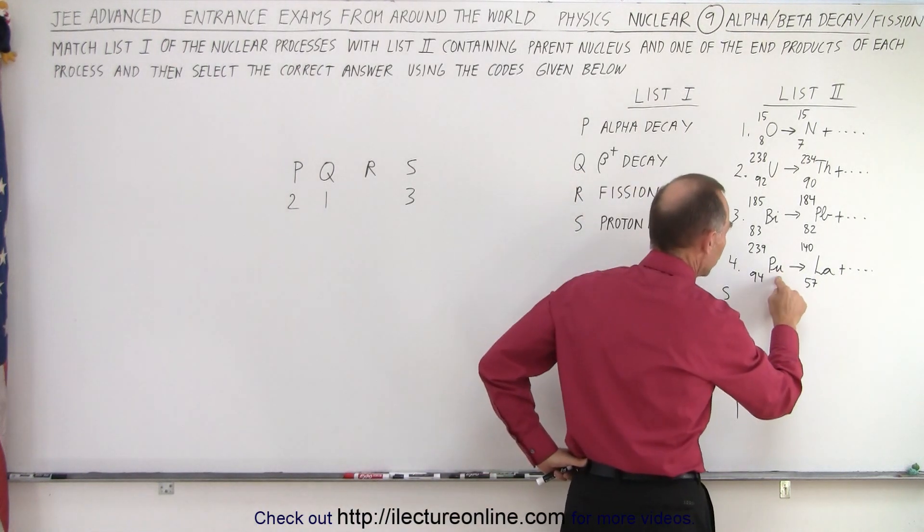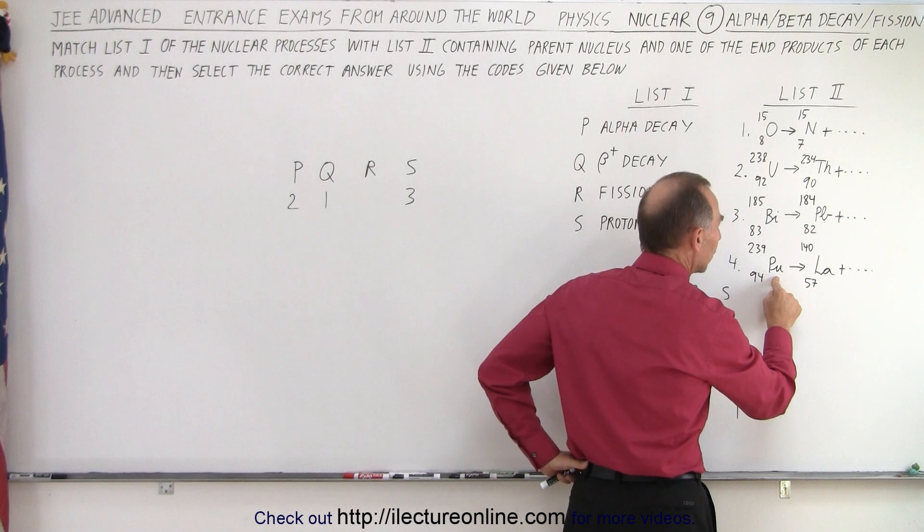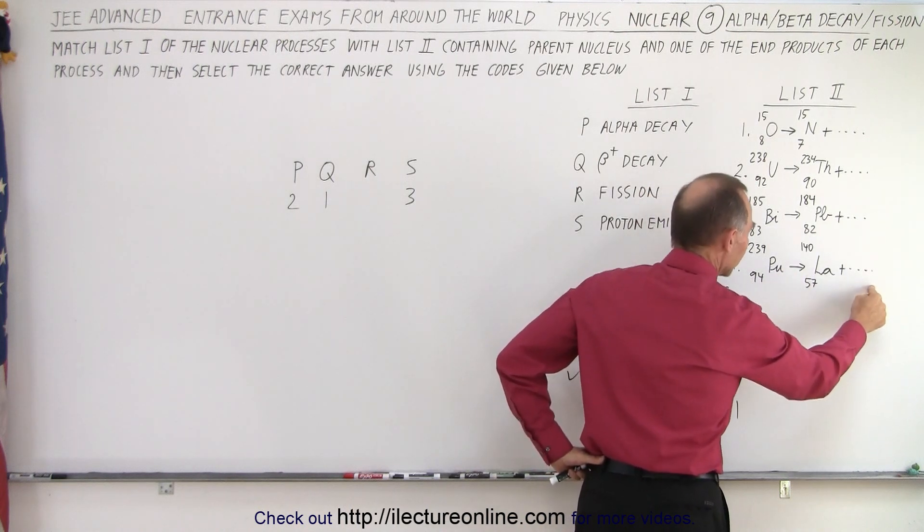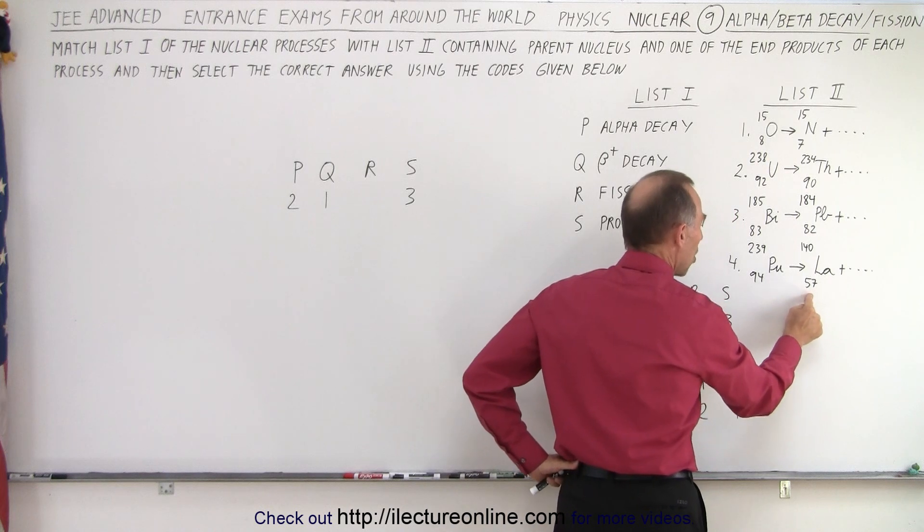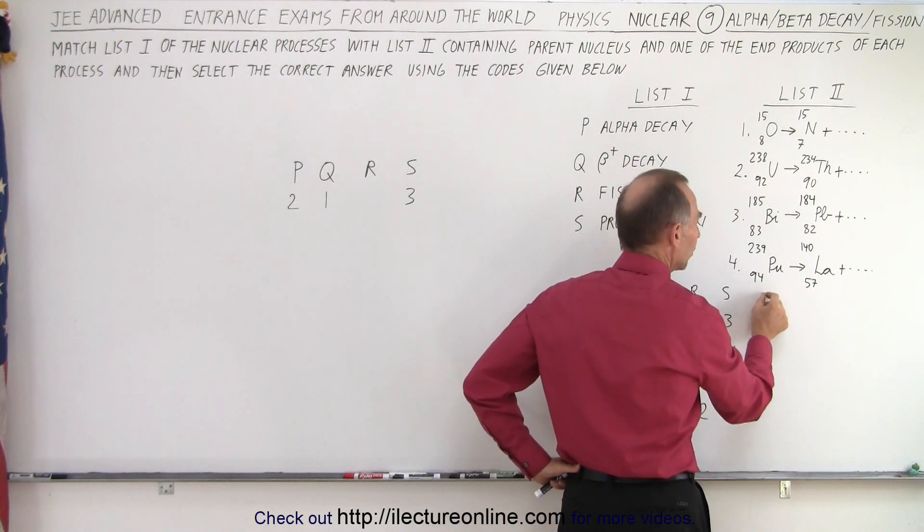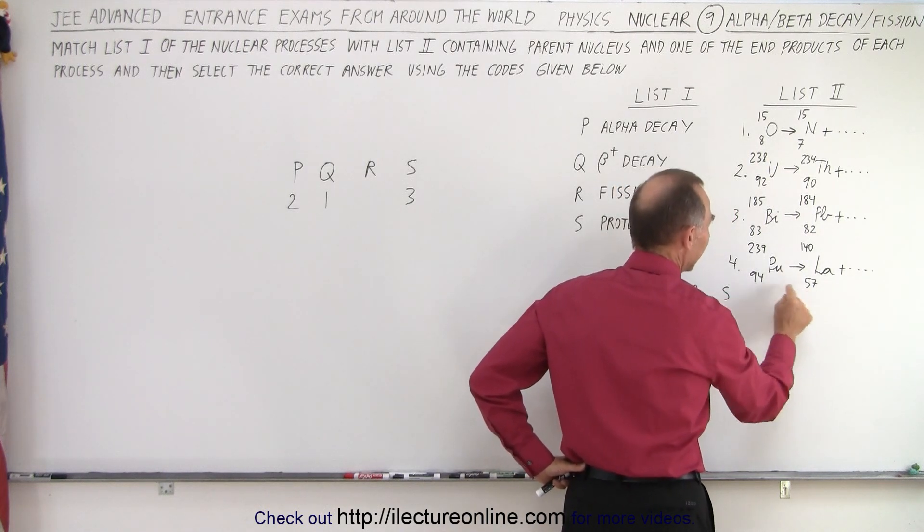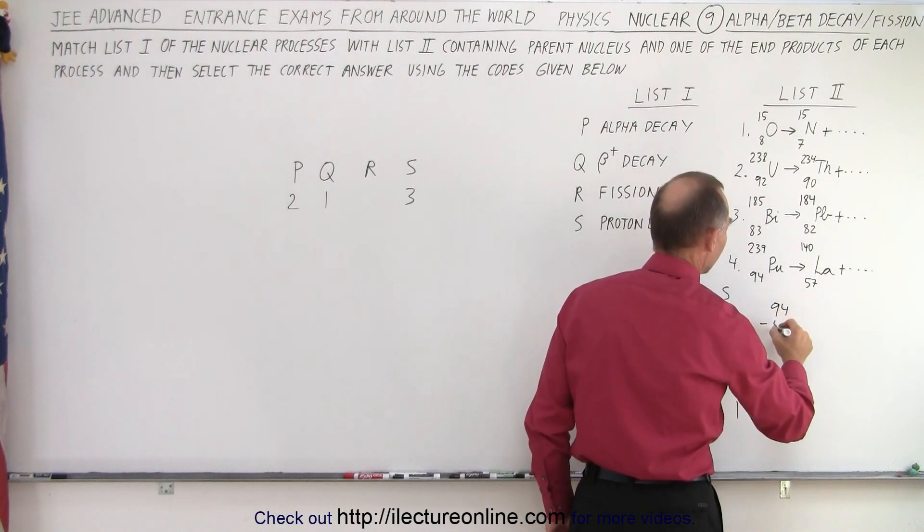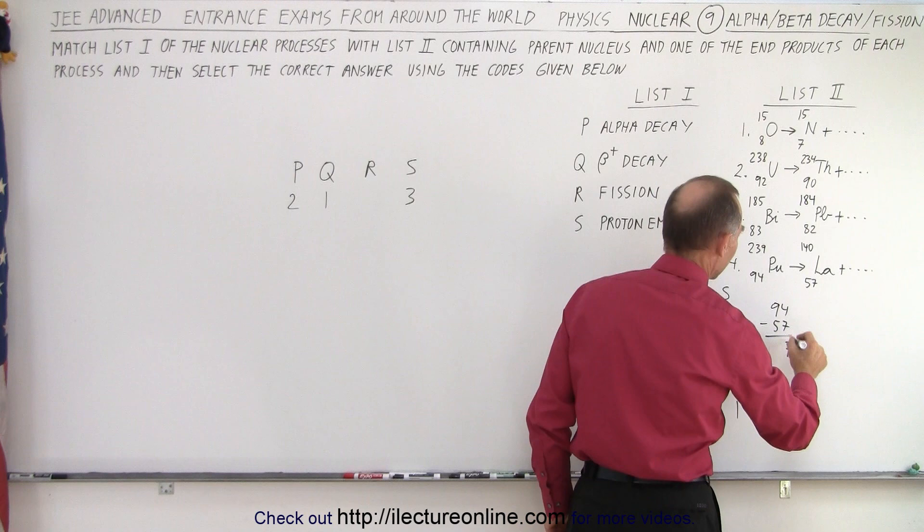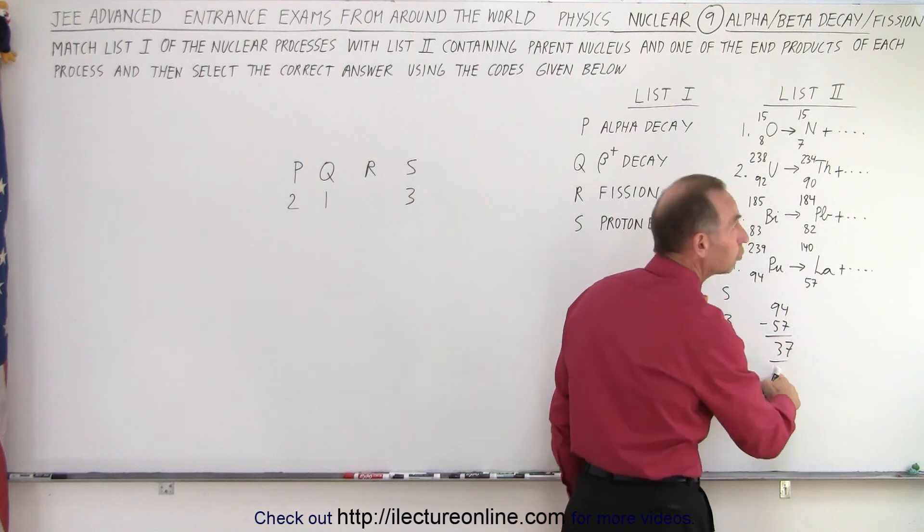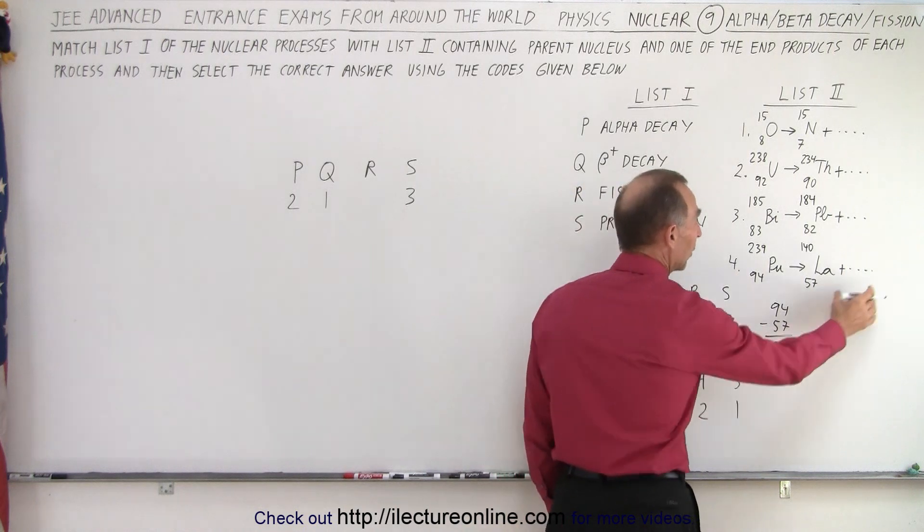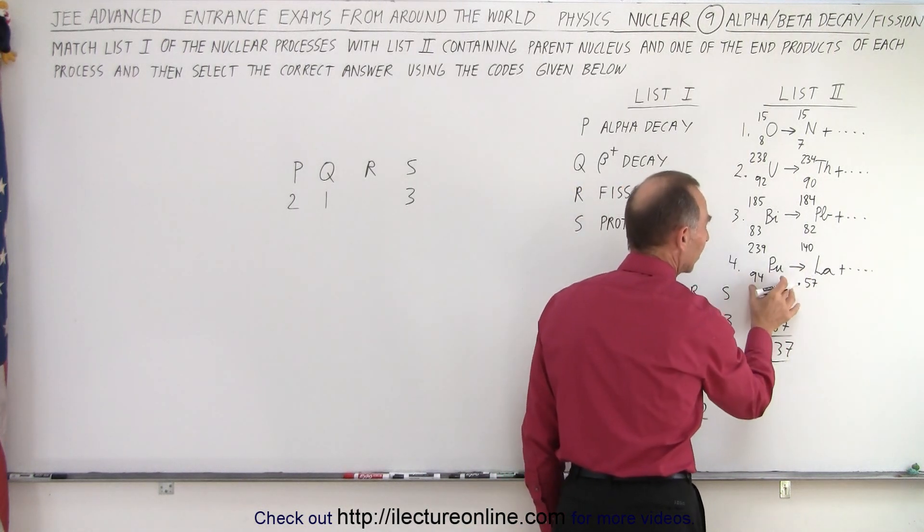Notice we have plutonium and that then goes ahead and becomes lanthanum and something else. Now notice this lanthanum is much smaller than plutonium so the other element we end up with, we can find out what that is by taking 94 minus 57. 94 minus 57 that would be a 7, 8, 3 and so I can't think of it right away what that is but that would be the other daughter product so you can see that it's clearly what we call a fission reaction.